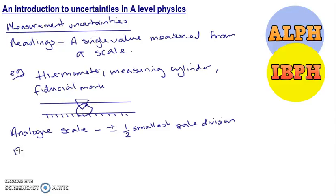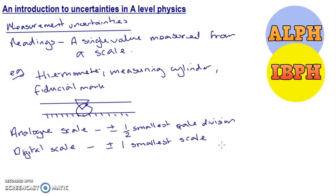If we've got a digital scale, we're going to use plus or minus one of the smallest scale division. We don't know whether our meter — ammeter, voltmeter, or any kind of digital scale — is rounding up or rounding down; we've got no way to know. So we stick with plus or minus one smallest scale division. So: readings from a single point use these rules for thermometers, measuring cylinders, or fiducial marks, for both analog and digital scales.